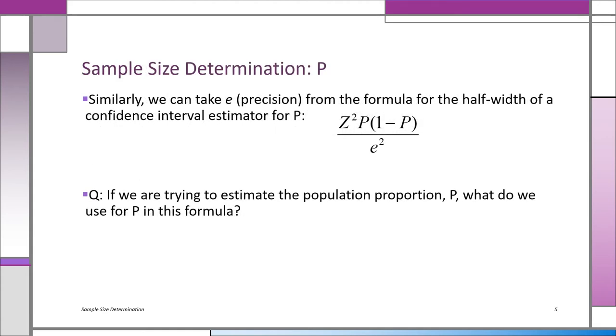So this problem is sample size determination for p, a proportion. When we're working with a proportion, the formula is very similar. Notice it's e squared. But here we have p times 1 minus p over the precision that we want, e squared. Now we don't have what p to use. So we generally assume the worst-case scenario that will blow it up as large as it can, which means p of 0.5. If p is 0.5, that will give you the largest possible n to use. So that's what we're going to do.